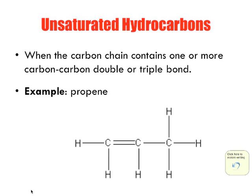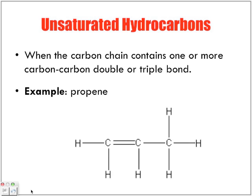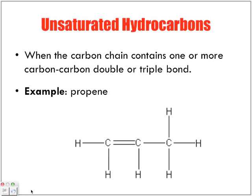Unsaturated hydrocarbons are those where the carbon chain contains one or more carbon-carbon double or triple bonds. Here's an example of propene — this is what we call an alkene. Again, carbon has four valence electrons, and here it forms a double bond with another carbon. We're not going to worry about naming these ones with double bonds today, but just so you can see: anything that contains a double bond or even a triple bond is known as an unsaturated hydrocarbon.